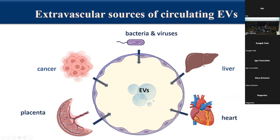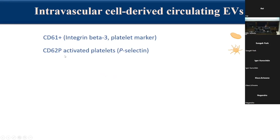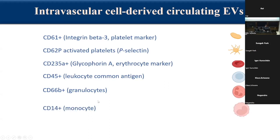I would like to point out some hints for how we can recognize these intravascular cell-derived circulating EVs. For platelets, we have tools like CD61 to recognize platelet-derived vesicles, and activated platelet-derived vesicles can be recognized by identifying P-selectin on their surface. Red blood cell-derived vesicles can be distinguished by their expression of glycophorin A, CD235A. We can look for CD45 as a leukocyte common antigen for leukocyte-derived vesicles, and granulocyte-derived vesicles by the expression of CD66B.